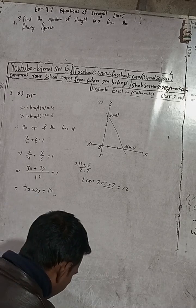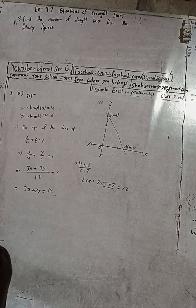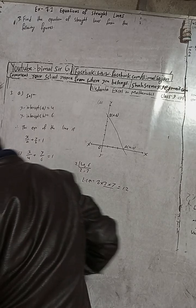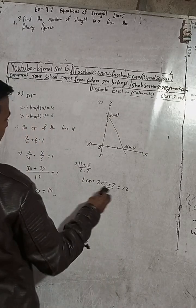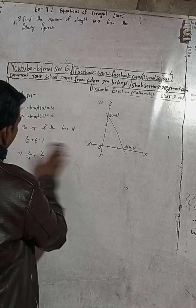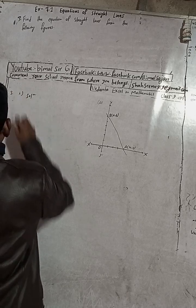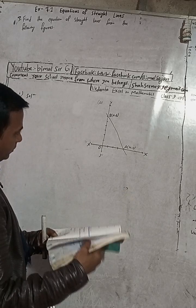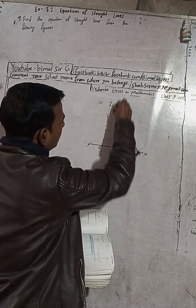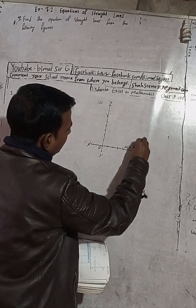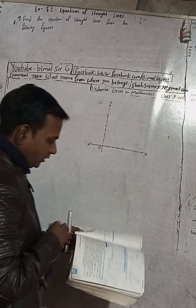Now for part B. In the B number figure, we need to identify the intercepts from the graph.